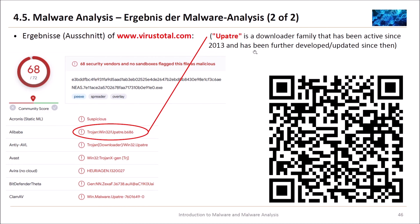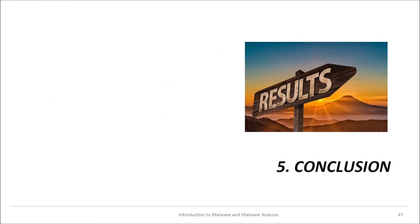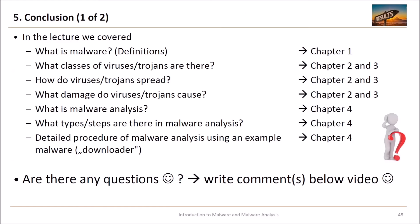Let's come to the conclusion. What did you learn today? We had a look at what malware is and its definition in chapter one. We looked at different classes of viruses and Trojans in chapters two and three — how they spread, what damage they cause. In chapter four, what malware analysis is, what steps are there, and a detailed procedure of malware analysis using an example malware which was the downloader Upatre.